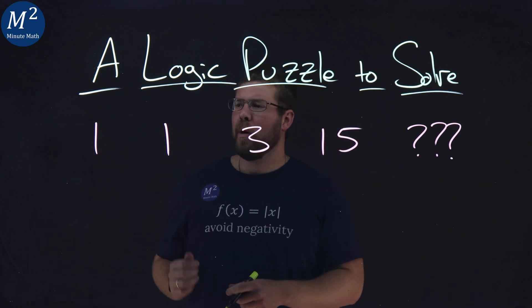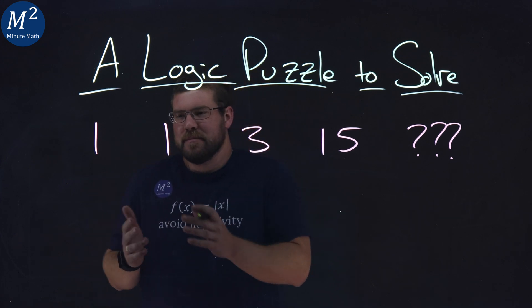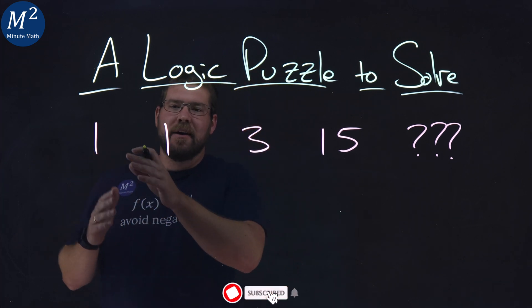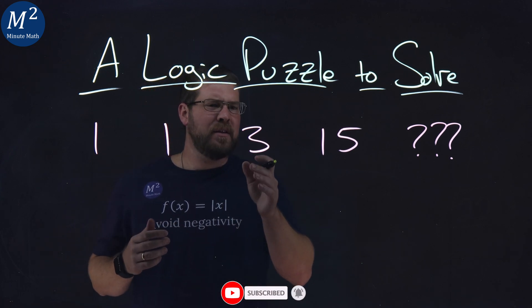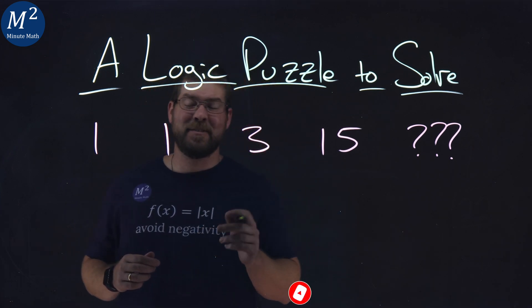Okay, I'm looking at 1, 1, and I'm thinking, well, how do I get 1 to 1, and then 1 to 3, then 3 to 15—sorry, not 5, 15.